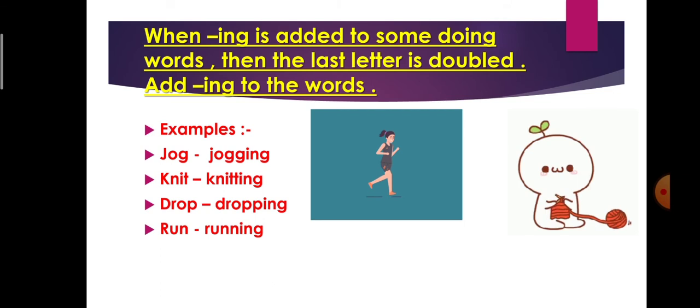Next rule, it is also very important. When -ing is added to some doing words, then the last letter is doubled. Add -ing to the words. It means, kuch words mein last letter ko hum double karte hain. Repeat karte hain aur -ing add karte hain. Example, jog. J-o-g. Now, when we add -ing to this word, that time we will repeat 'g'. We will add one more 'g' to this word. Like, j-o-double-g-i-n-g. 'G' ko hum ne yaha par double kiya hai.